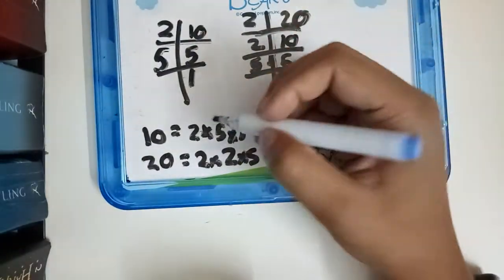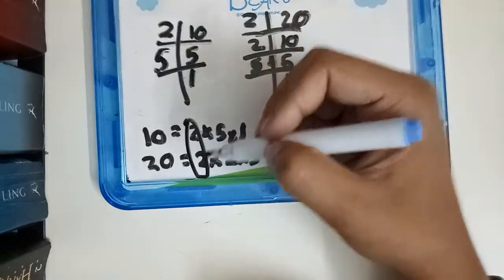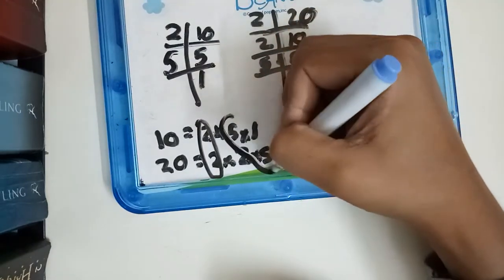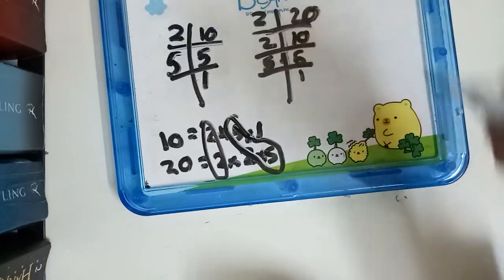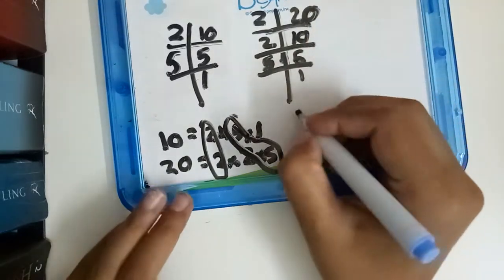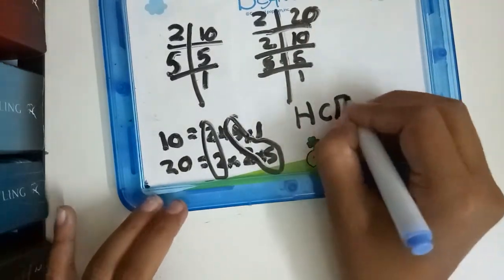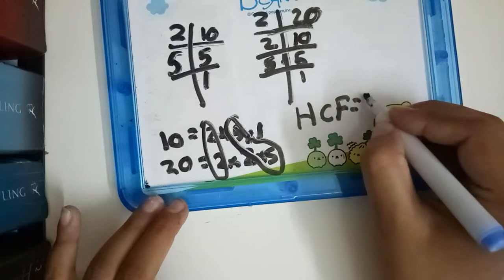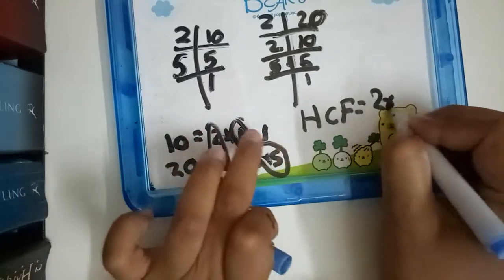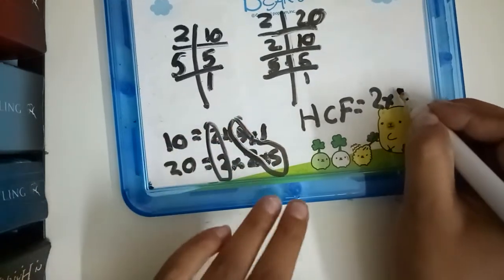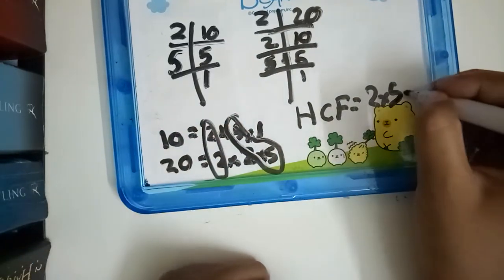Now let's find the common factors. We have a 2 and a 5 in common. So the HCF is equal to 2 multiplied by 5, which is 10.